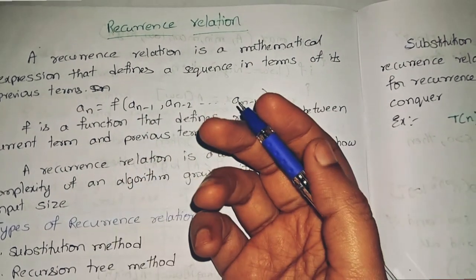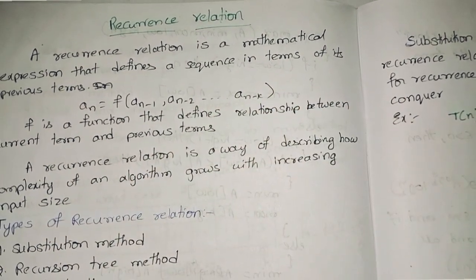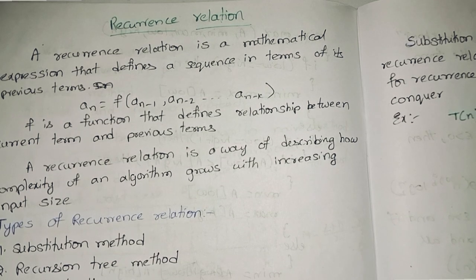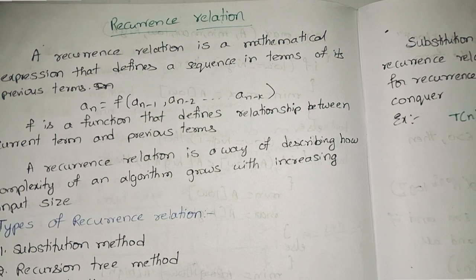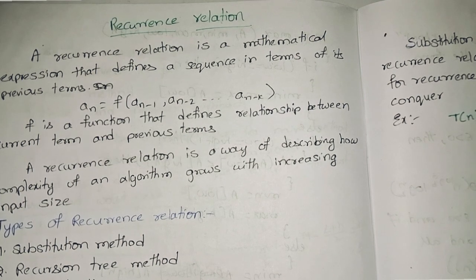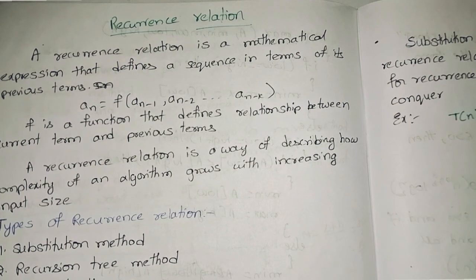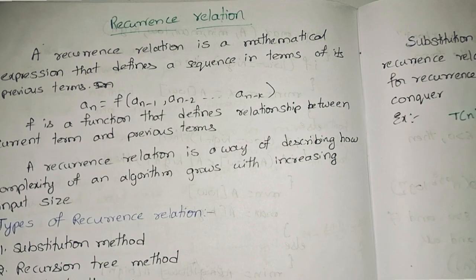An algorithm is recursive if it can call itself. Recursive algorithms generally solve a problem by reducing the problem to an instance of the same problem with smaller input. Often times a recursive solution is the most natural and therefore gives the simplest procedure.